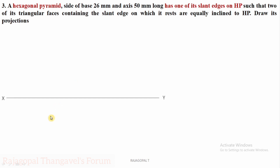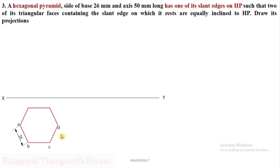The top view of the hexagonal pyramid is a hexagon where this corner is on HP. After completing this, give notation: side is 26 mm, and label each corner A, B, C, D, E, and F. Complete all the slant edges and fix point O, then extend projectors from all the corners as well as from the center point or axis point O.